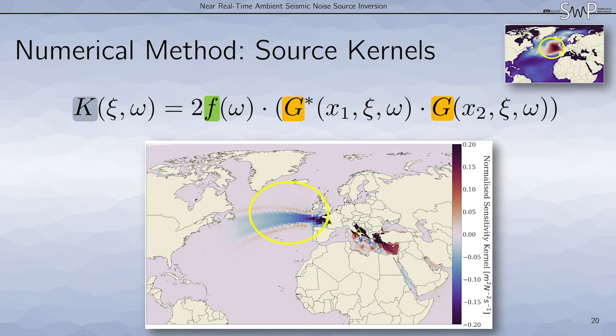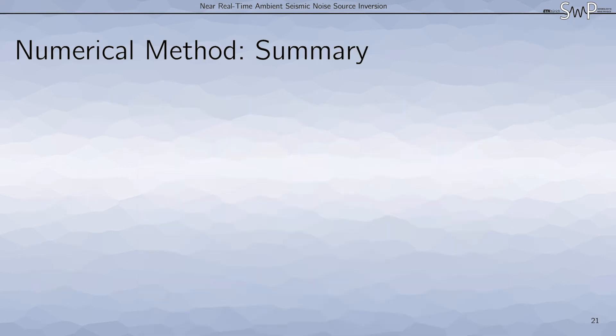As we can see, the sensitivity kernel has a strong blue and therefore negative area just off the coast of Europe. This is where the dominant noise source is in the forward modeling. So we have a blue area that means an increase in noise source strength will decrease the misfit. And if we have a red area, a decrease in noise source strength will decrease the misfit.